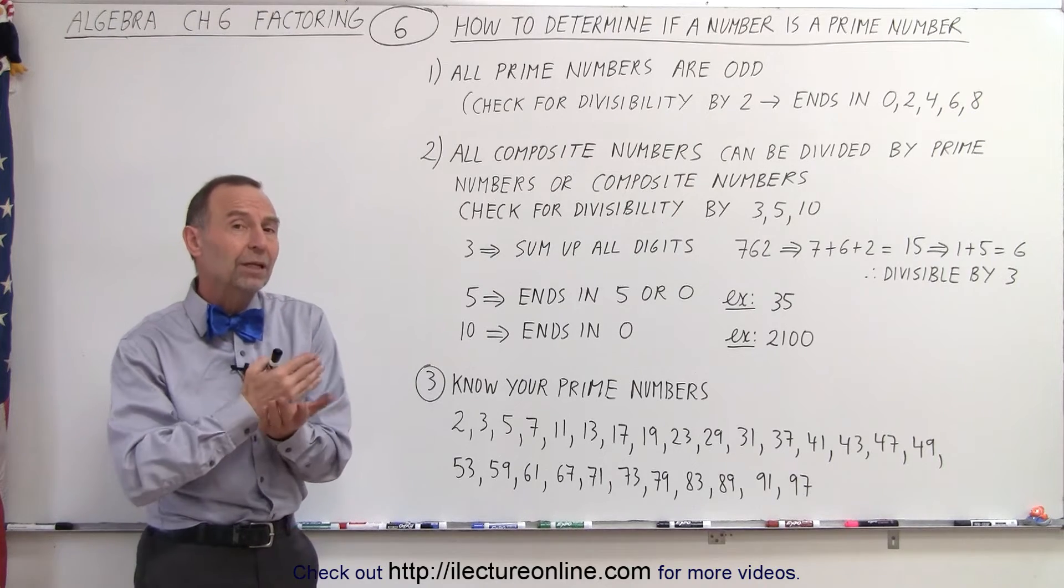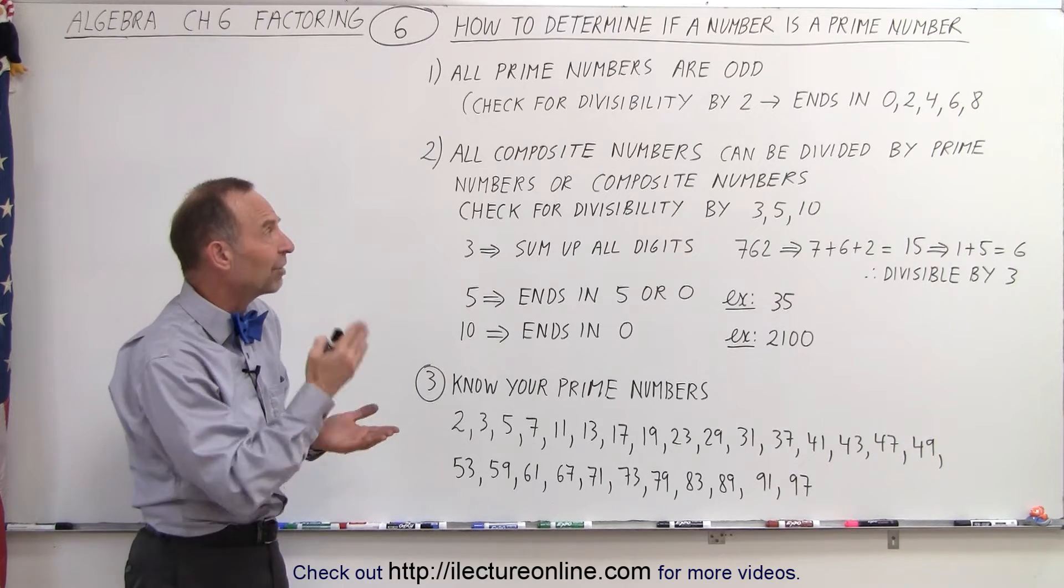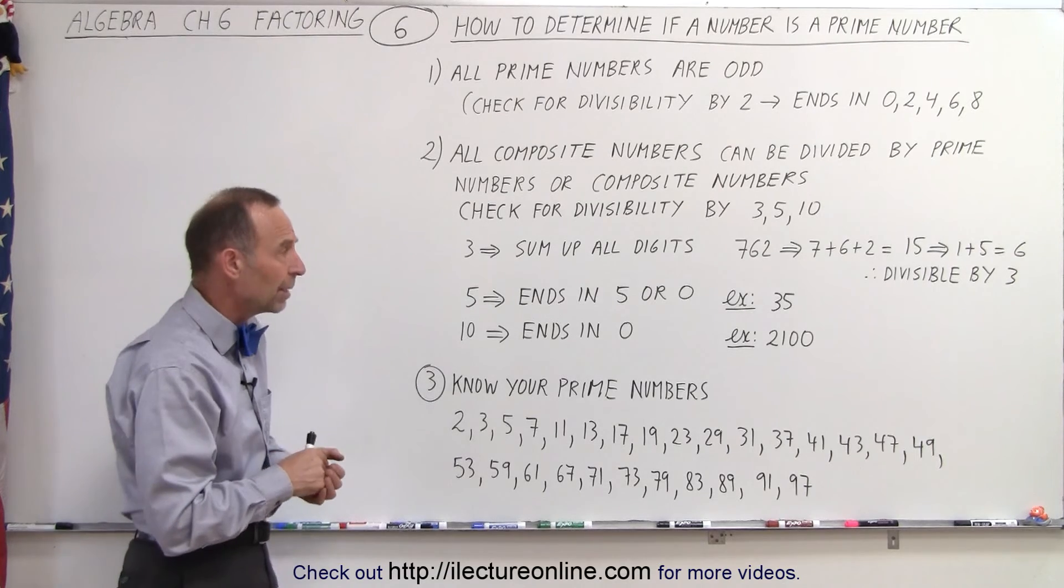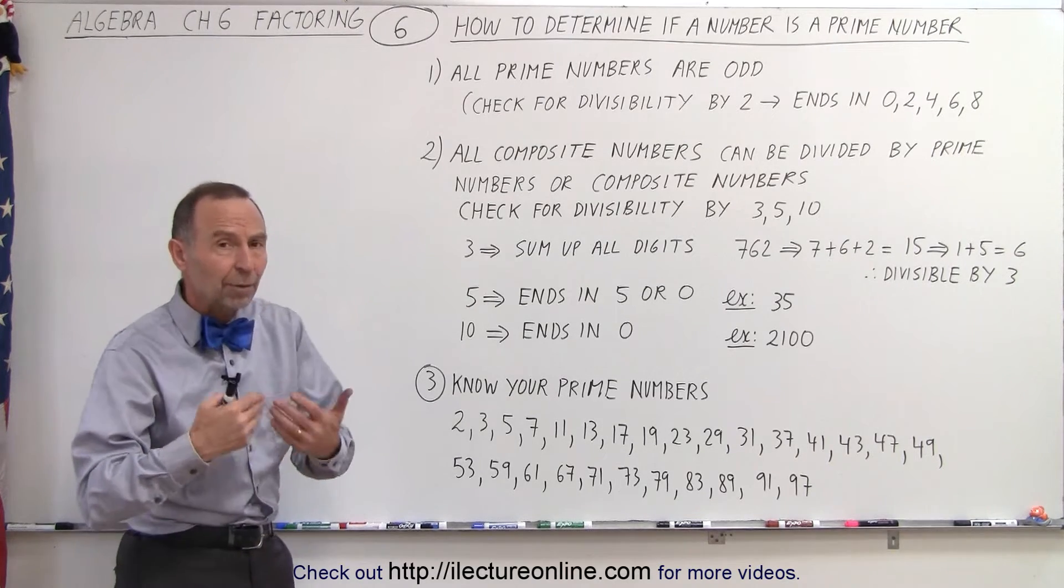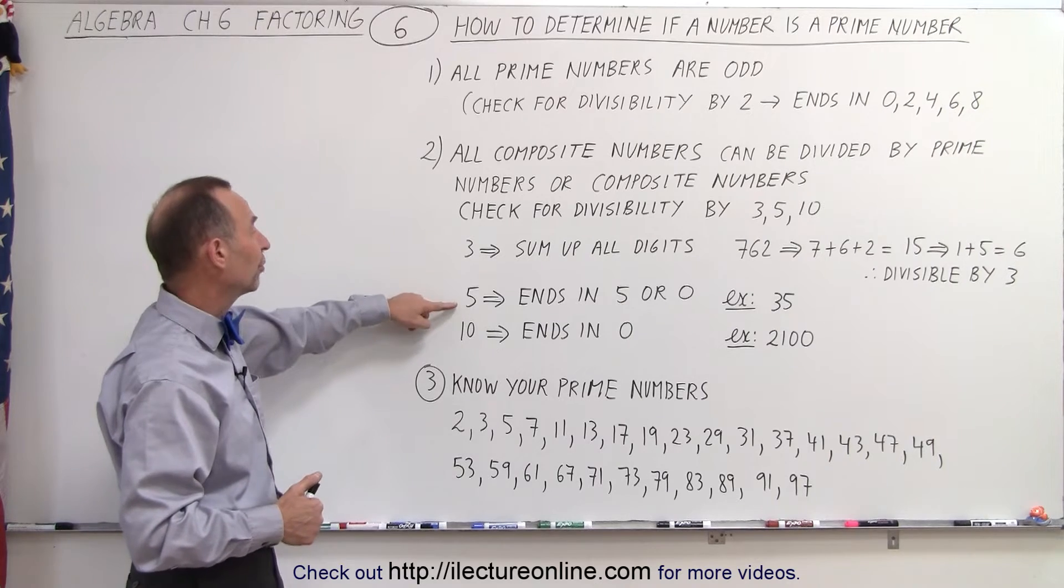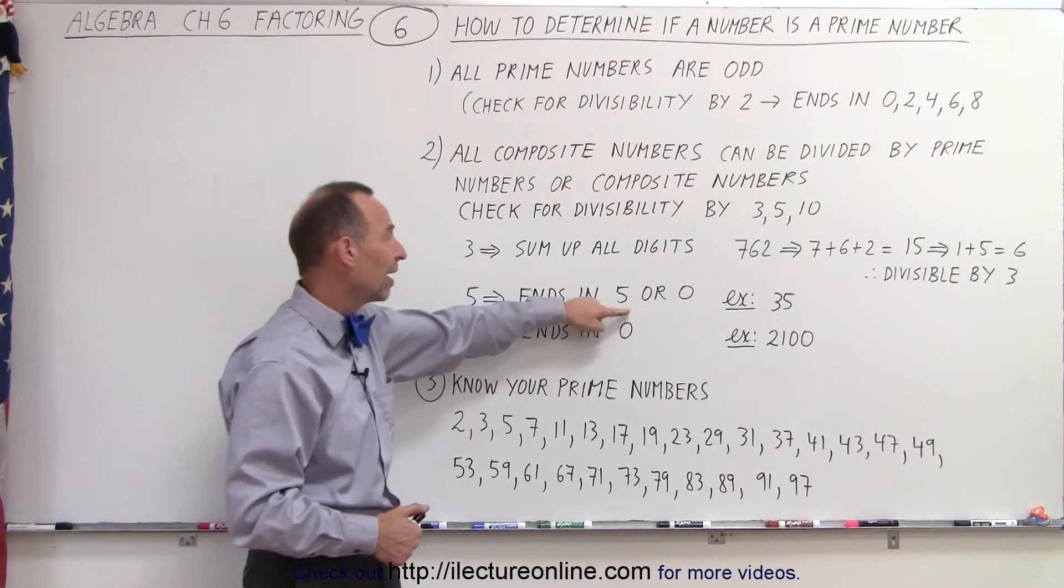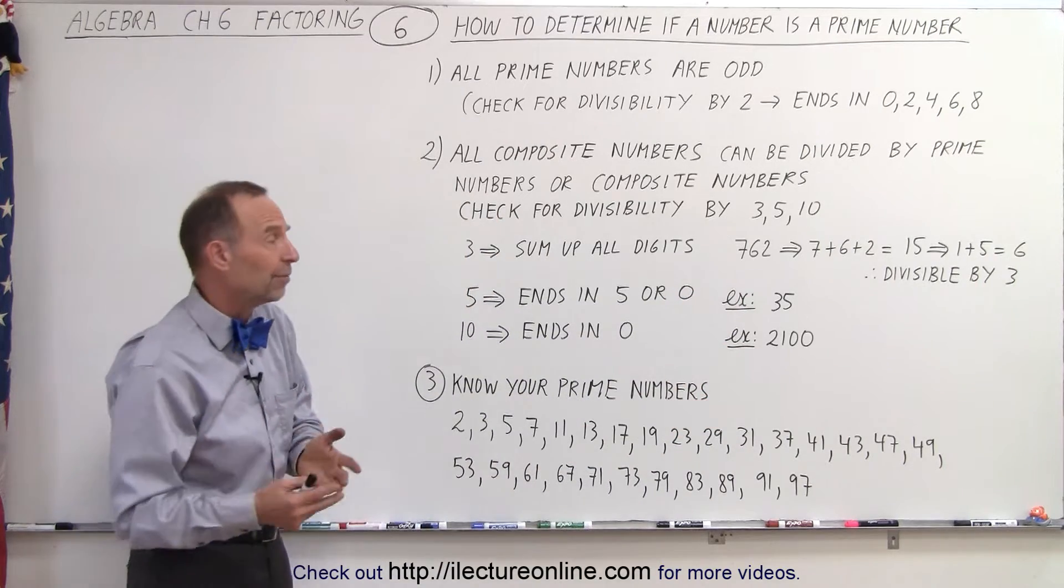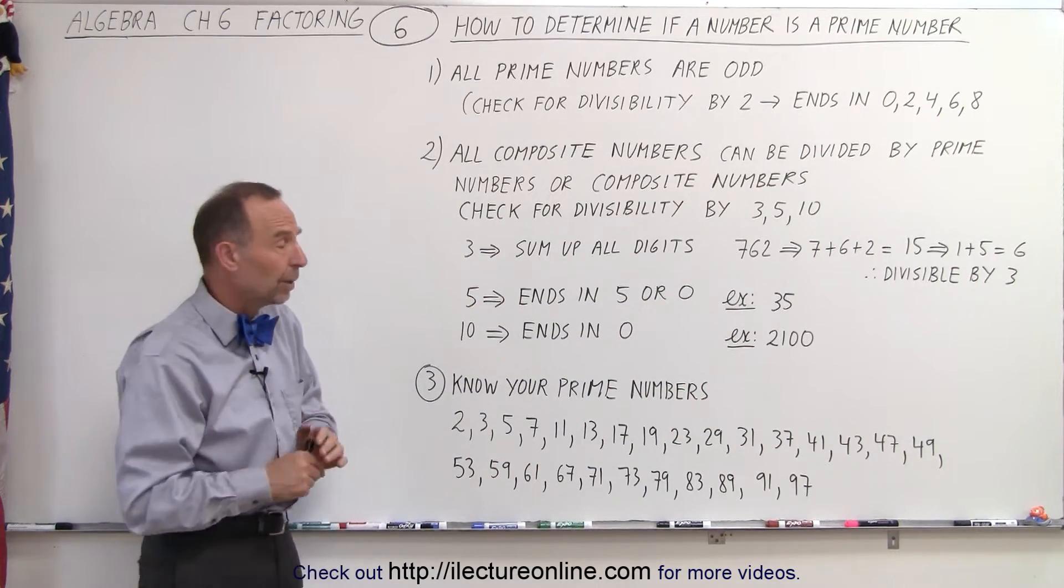So very quickly we can eliminate most numbers by checking for divisibility by 2 and for divisibility by 3. We can also check for divisibility by 5, because if the number ends in a 5 or a 0, example 35, then it's divisible by 5, and it's also not a prime number.